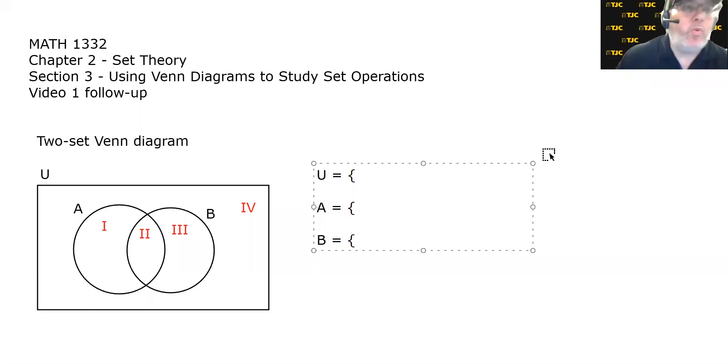This is a follow-up to Video 1 from Chapter 2, Section 3 for Math 1332. After concluding the video, I realized there was a very easy yet important thing that I needed to point out before we move forward to Video 2. My apologies for having a break in the first video and the follow-up, but that's just the way it is sometimes. The follow-up involved describing each set in a Venn diagram as the collection of the regions it's made of.